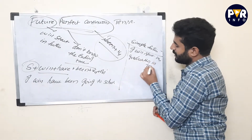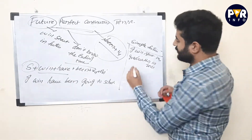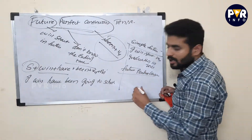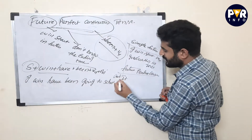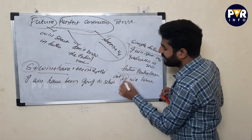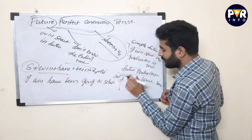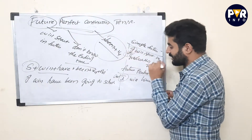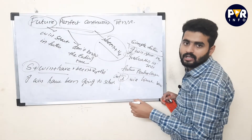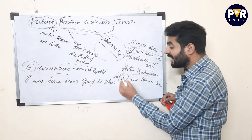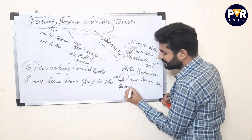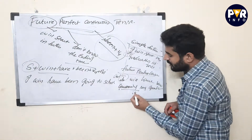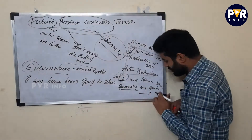For example: 'I will start my graduation in 2021' — that gives us the starting time. Then for future perfect continuous: 'I will have been pursuing my graduation' — we don't know the ending time. So the sentence is: 'I will start my graduation in 2021 and I will have been continuing or pursuing my graduation' — with no known ending time.